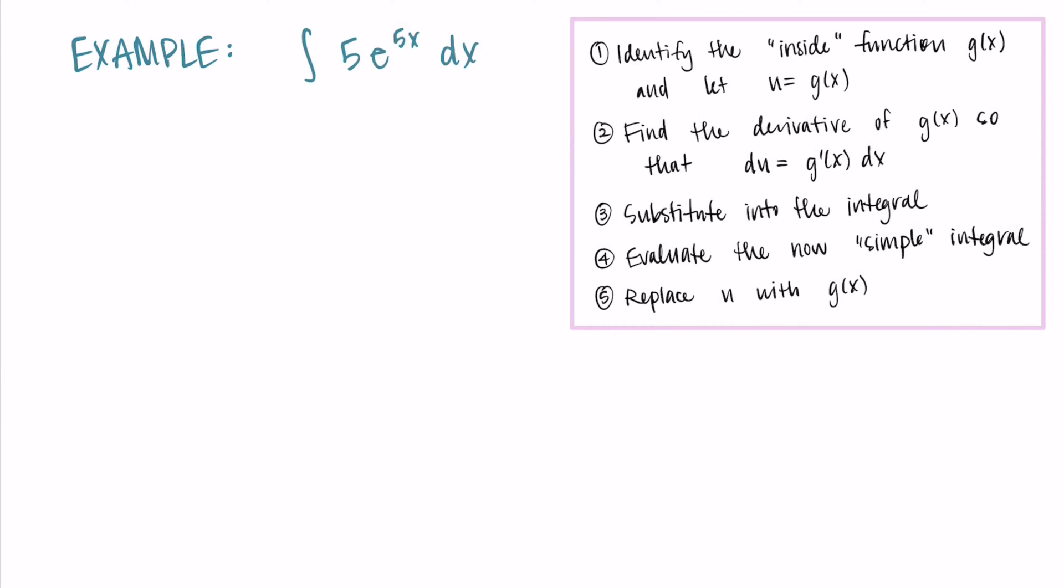All right, so here I'm noticing that I have five times e to the something. So that power up there is probably what I need to choose for my u. If I had e^u, I'd know what that antiderivative is. So I'd like to get rid of that 5x and make it something easier. So I'm going to let u be equal to 5x.